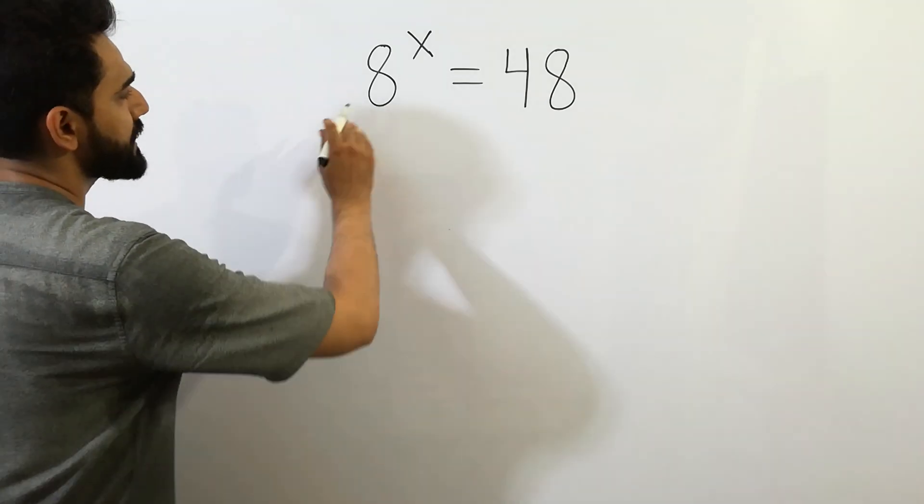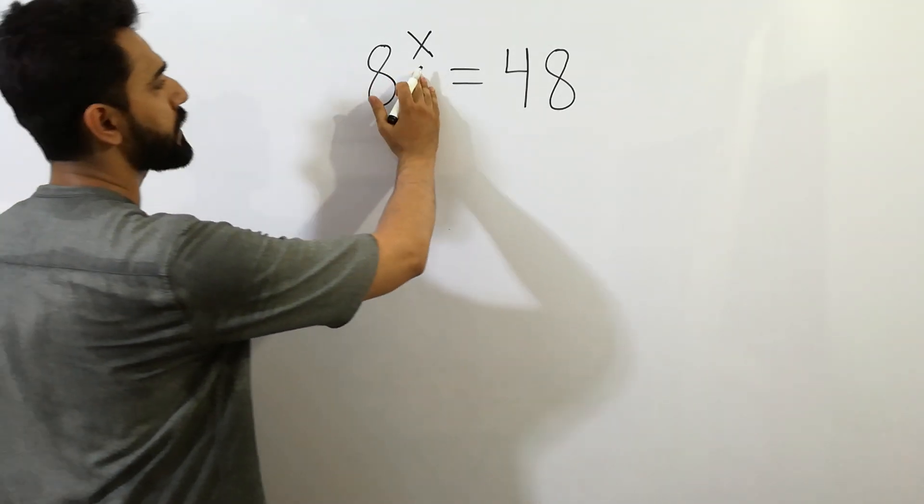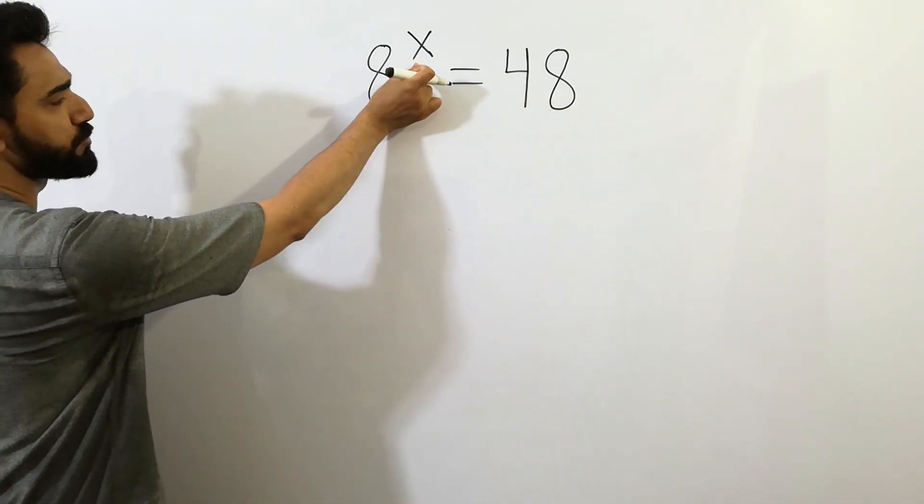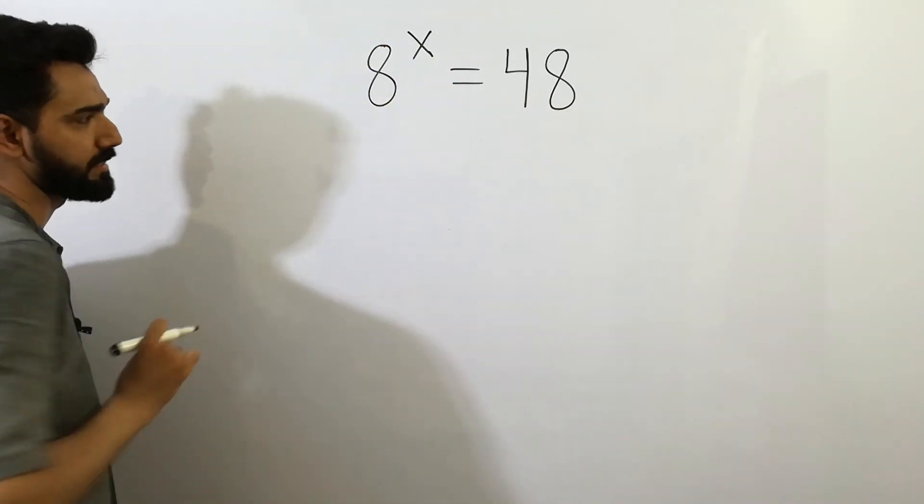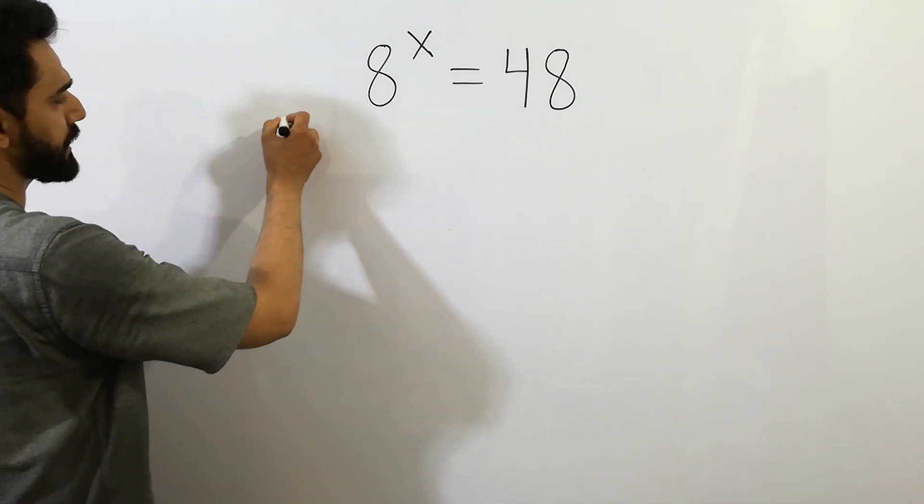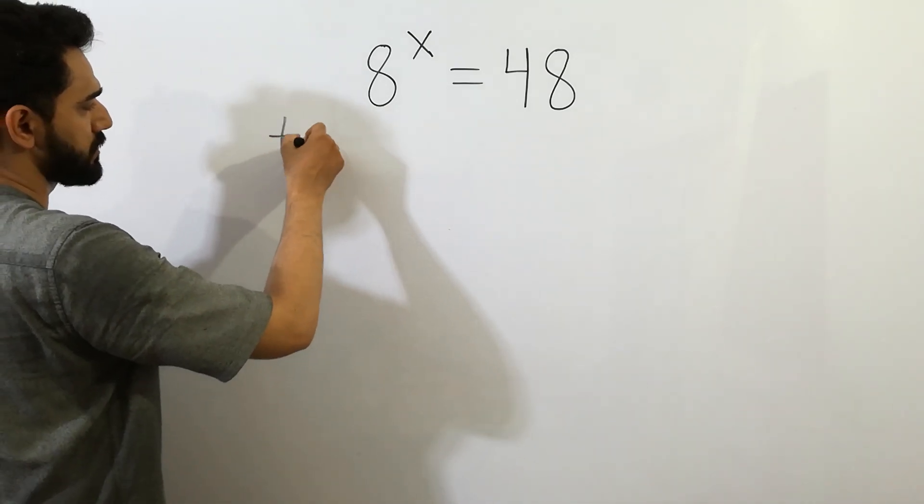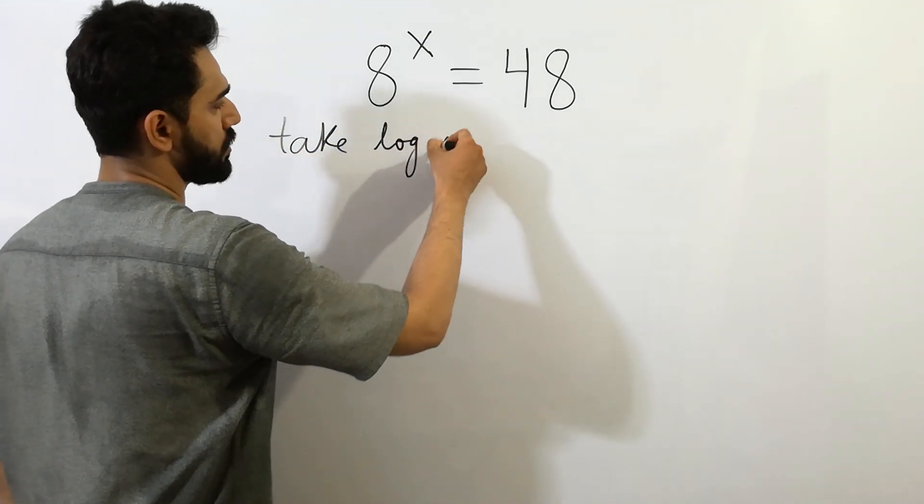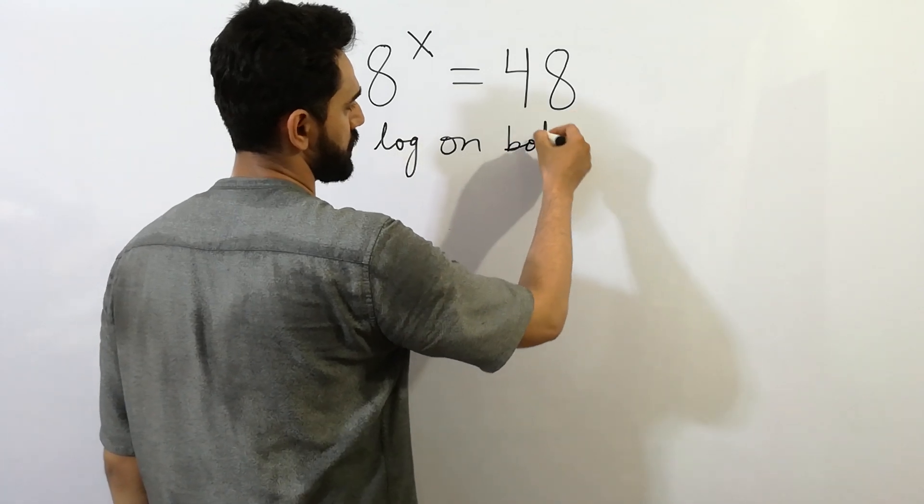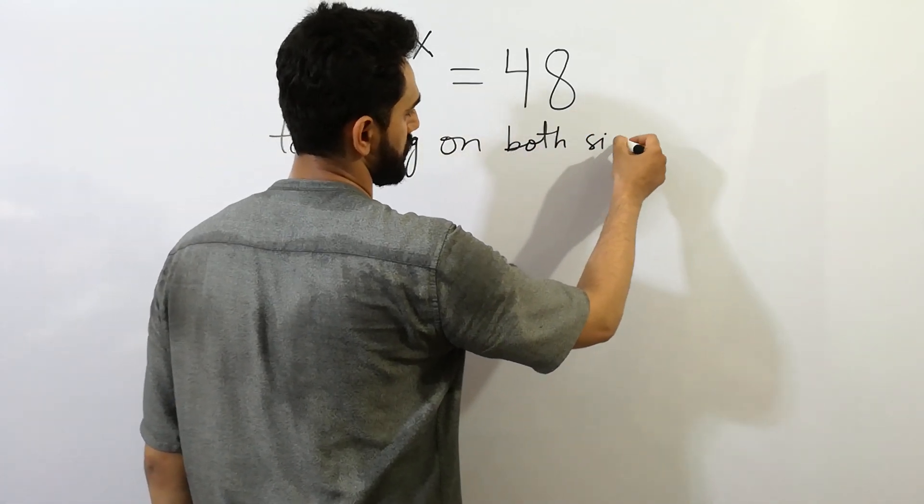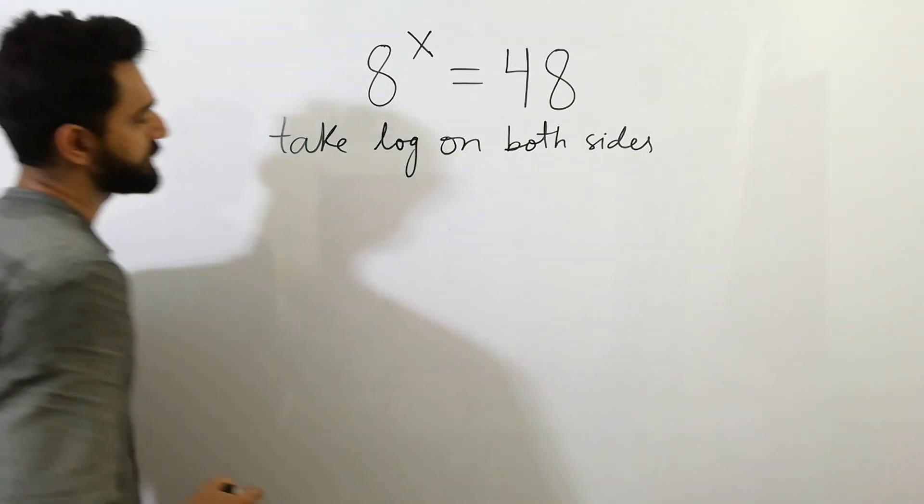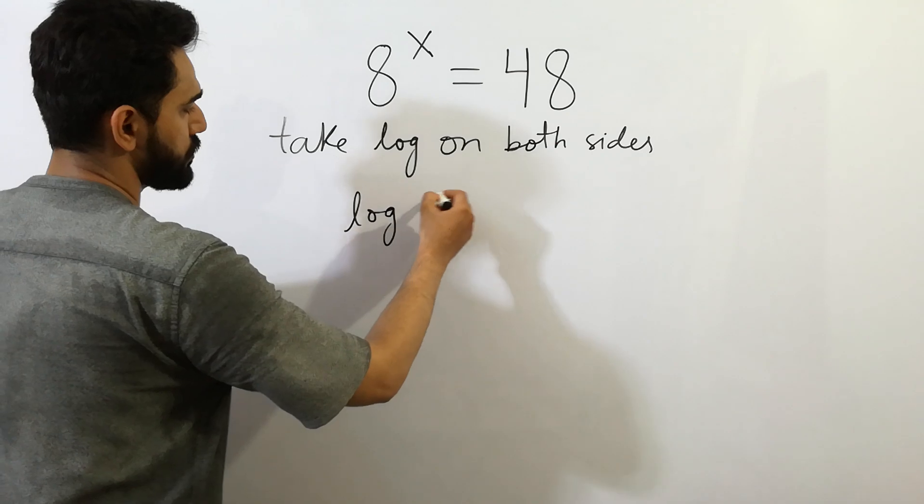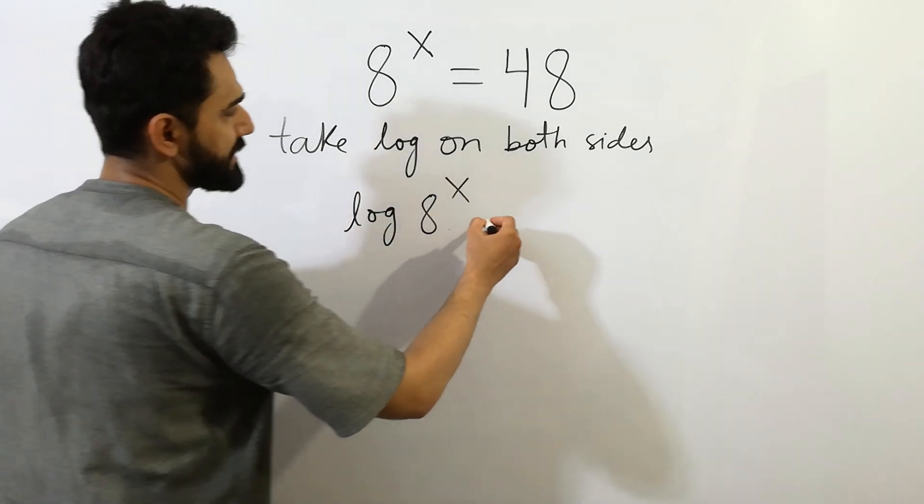Hey guys, 8 to the power x is equal to 48. What would be the value of x? Let's solve it. In the first step, take log on both sides. We get log 8 to the power x is equal to log 48.